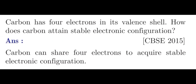Question number 2. Carbon has 4 electrons in its valence shell. How does carbon attain a stable electronic configuration? The answer is carbon can share 4 electrons to acquire a stable electronic configuration.